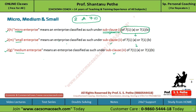Micro enterprise means enterprise as defined under sub clause 1 of Section 7(1A) and 7(1B). Small enterprise means enterprise defined under sub clause 2 of Section 7(1A) and 7(1B). And Medium enterprise means enterprise defined under sub clause 3 of Section 7(1A) and 7(1B). अगर exam में इसके ऊपर question आता है तो Section 2H, 2M और 2G यहाँ से definitions start करनी हैं और उसके बाद Section 7(1) पे जाना है.